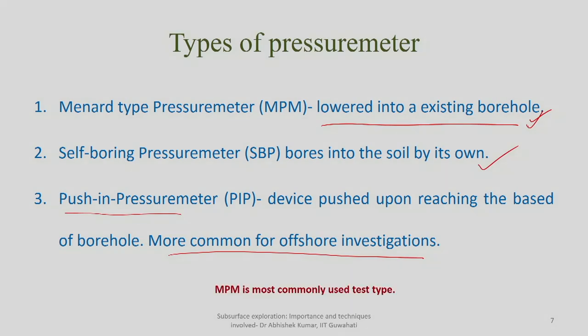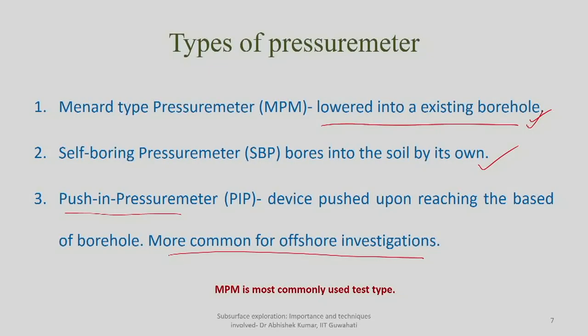The Menard-type pressuremeter (MPM) is the most common for on-ground in-situ investigations. A small diameter borehole of typically 65–75 mm is drilled, the probe is lowered, and a surface pressure and volume assembly measures the applied pressure and resulting deformation. There are standard probe designations for different probe sizes corresponding to different borehole diameters.